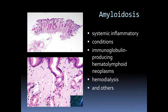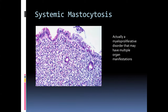Although not specifically an inflammatory disorder, amyloidosis is also seen in the stomach. In a very florid case, at low power the very pink lamina propria jumps out at you. Amyloidosis is associated with systemic inflammatory conditions or immunoglobulin-producing hematolymphoid neoplasms. We typically do a Congo red stain and then polarize the tissue to identify the very characteristic apple-green birefringence, whether it's in the stomach, bladder, or elsewhere.